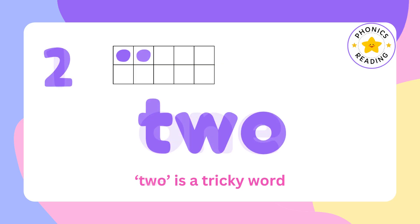2 is again a tricky word. Tricky words cannot be sounded out. So we learn it as T-W-O: 2.